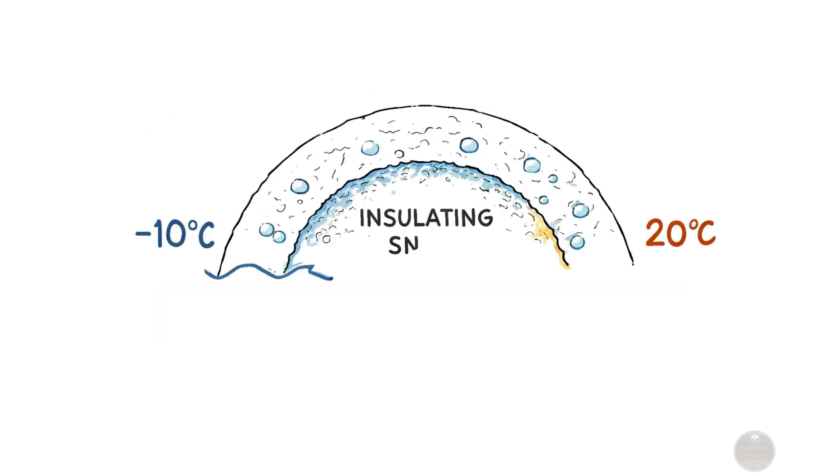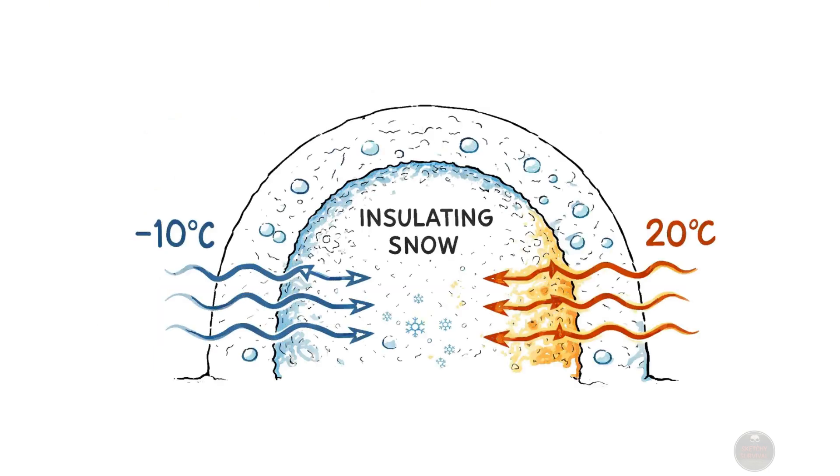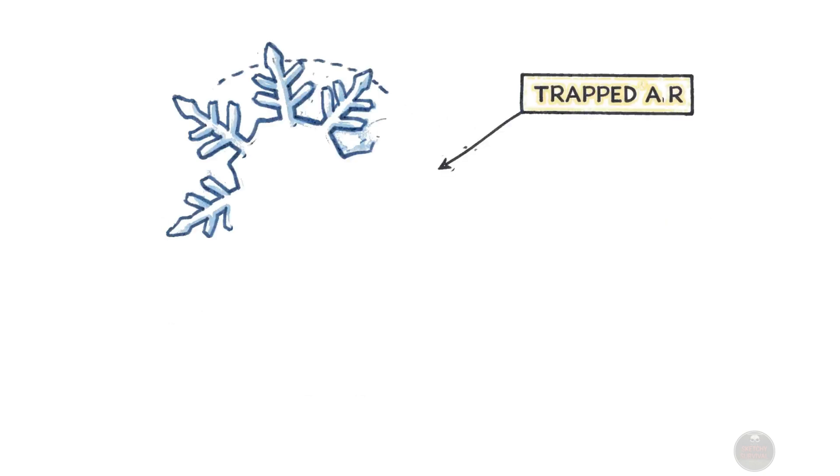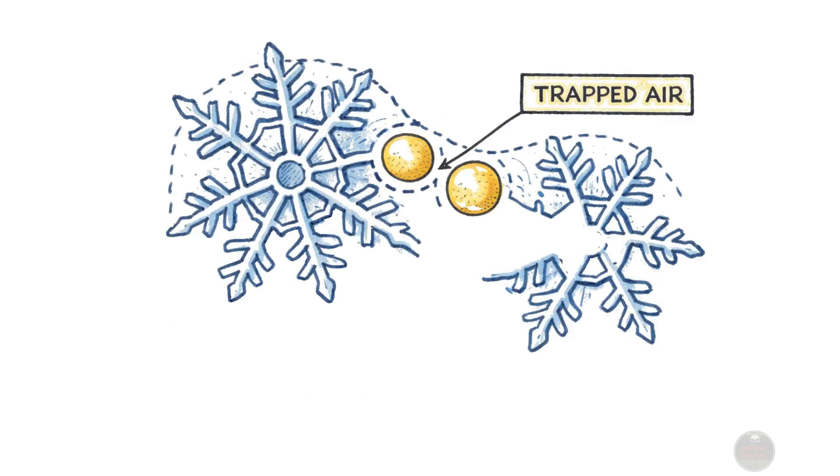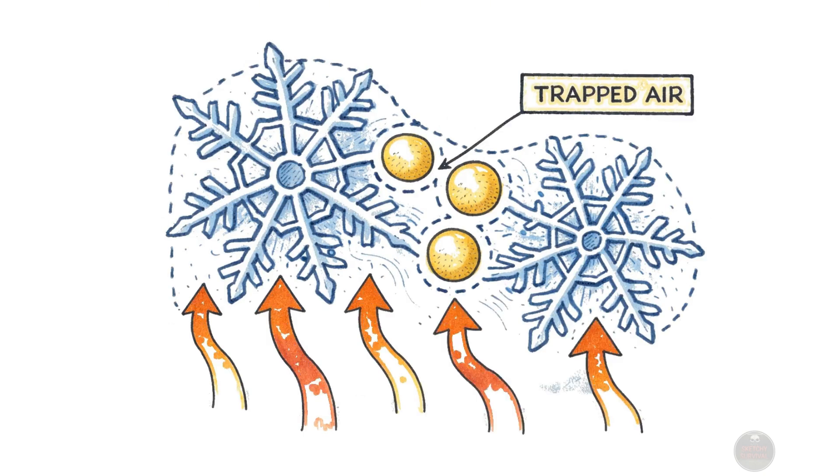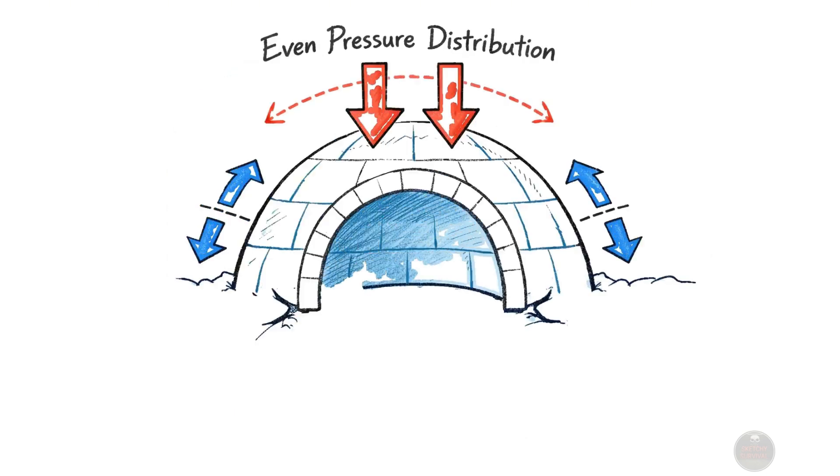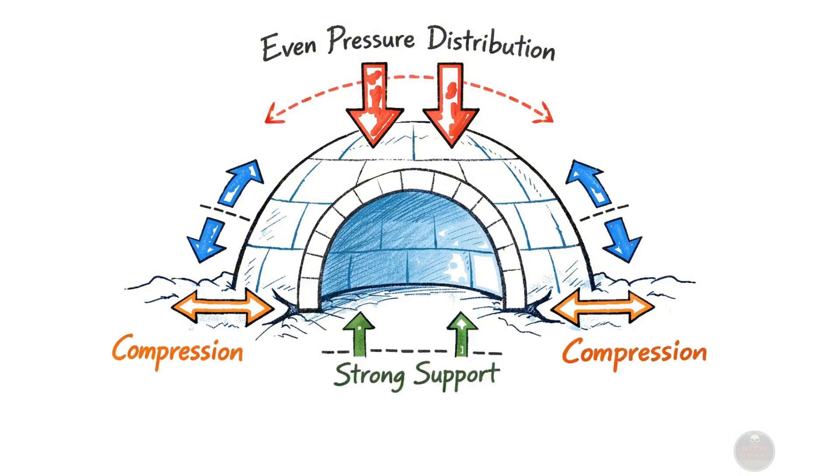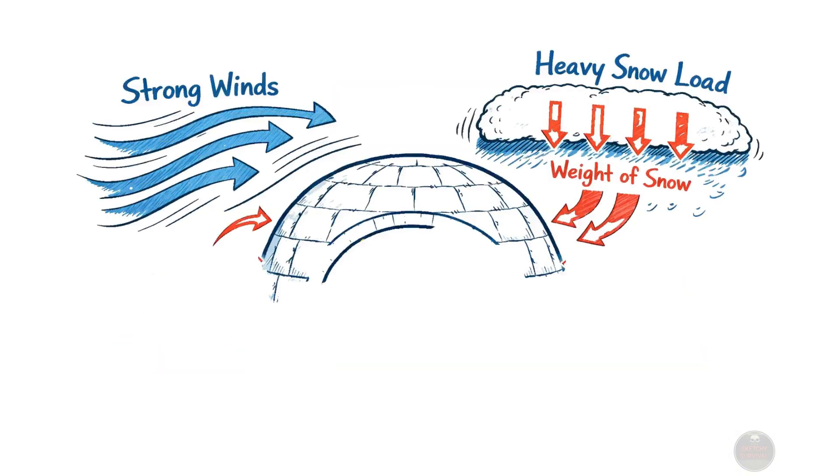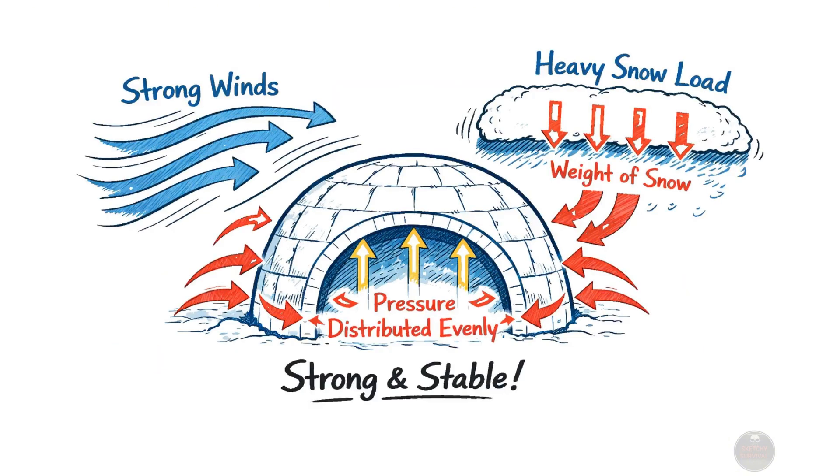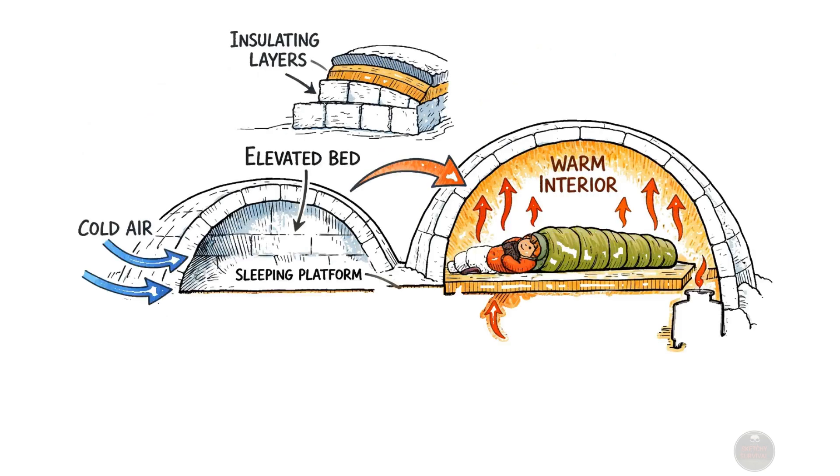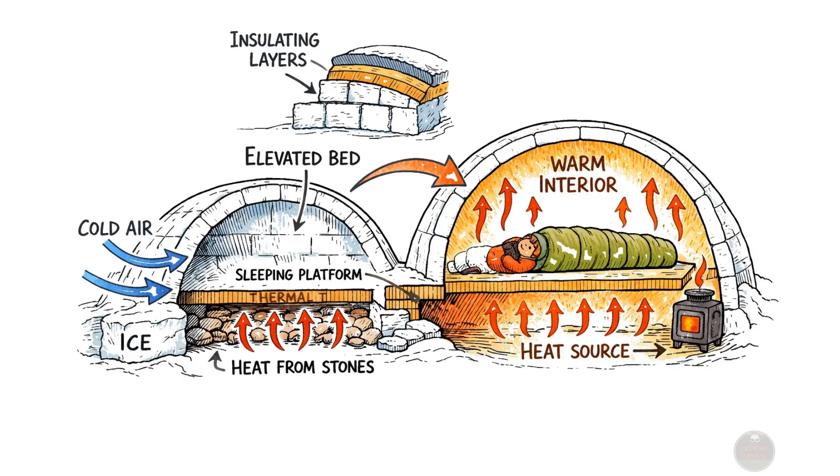This impressive temperature difference is maintained by the insulating qualities of the snow itself. The snow traps air within its crystalline structure, effectively slowing down heat transfer. The dome shape also provides exceptional structural strength, distributing external pressures evenly across its surface, making it resistant to strong winds and heavy snow loads. With these thermal principles and construction techniques, you can turn the frozen landscape into a life-saving sanctuary.